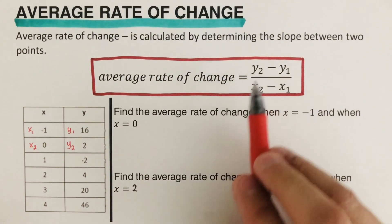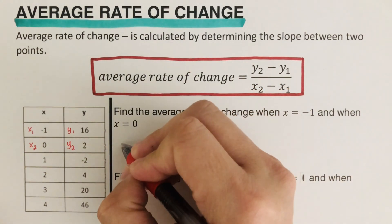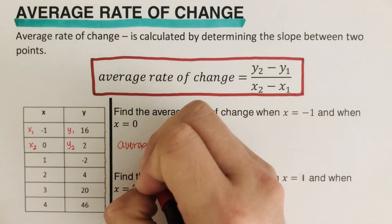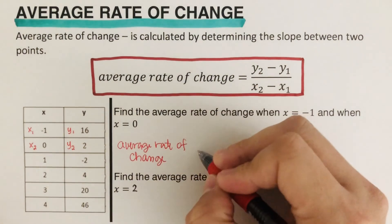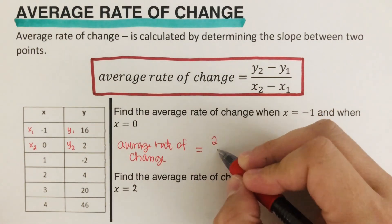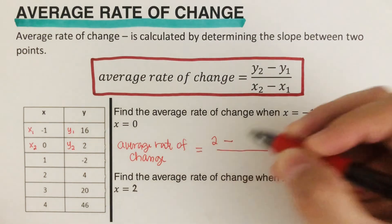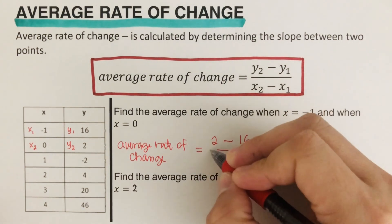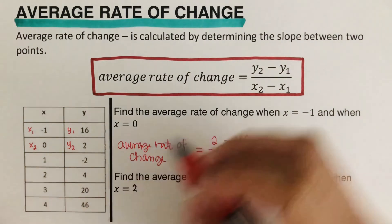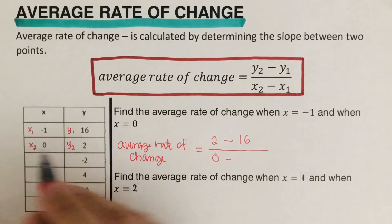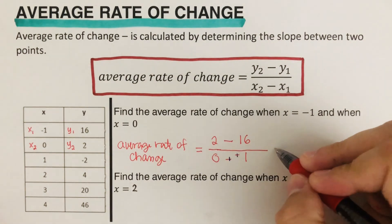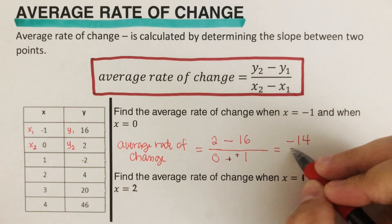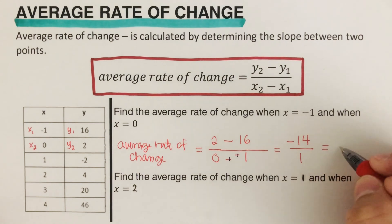So we go ahead and plug it into the equation. The average rate of change is equal to y sub 2 is 2, minus y sub 1 is 16, over x sub 2 is 0 minus x sub 1 is negative 1. We change the double negative to plus, so this comes out to negative 14 over 1, which is negative 14 — that is the average rate of change.